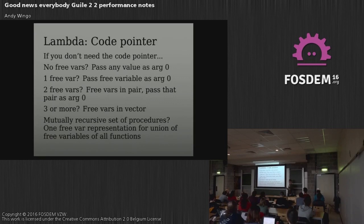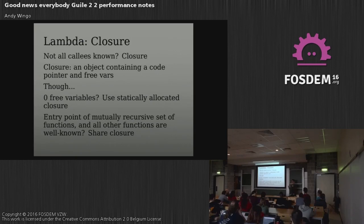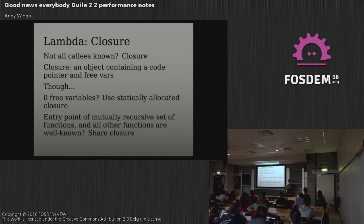The call is replaced with a call-label instruction going to an offset — a faster call because we know the procedure offset. This can only happen where all callers of the function are known. With a code pointer, you never need to build a procedure object. Guile uses a uniform calling convention where the callee is passed as argument zero. But we can use a different representation for the free variables: if zero, pass a false value; if one, pass the free variable directly as the closure; if two, use a pair; if three or more, use a vector. This can also handle mutually recursive sets of procedures by taking the union of all free variables.